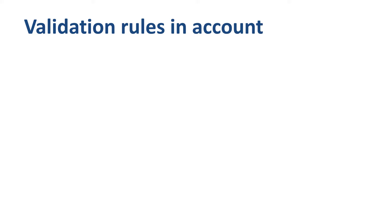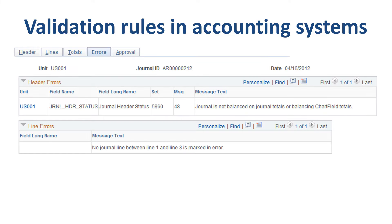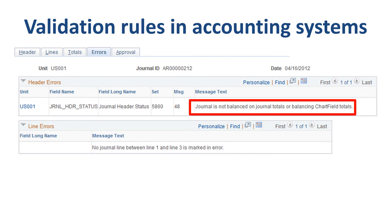We have moved from the days of manually writing journal entries into large ledger books, to electronic posting of journal entries into large databases. Every accounting system has a validation rule that checks whether a journal entry is balanced, so the need to check whether a trial balance is balancing between debits and credits has decreased. It is still worthwhile to know how suspense accounts work in the days of electronic postings, as somebody could have forced a journal entry through by plugging amounts into suspense.